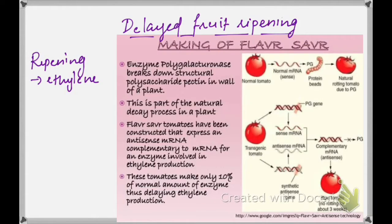Good morning. Today's topic is the first one: delayed fruit ripening. Ripening in plants is promoted by a hormone ethylene, and there is an enzyme polygalacturonase that breaks down the structural polysaccharide pectin in the wall of the plant, leading to softening of the tissues.